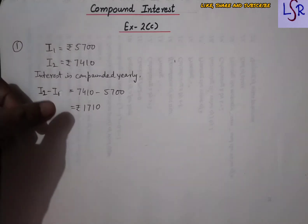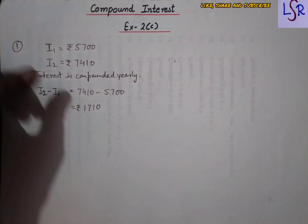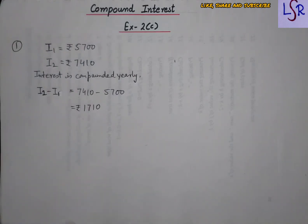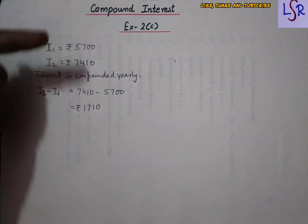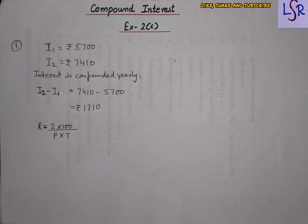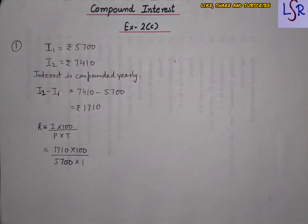This difference of 1710 is the interest earned on the first year's interest value. So we use the formula: Rate = (I × 100) / (P × T), where the time is one year. Placing the values and solving, we get 30% as the answer.